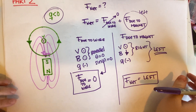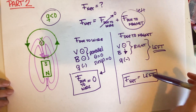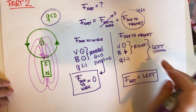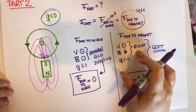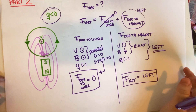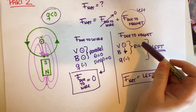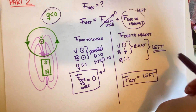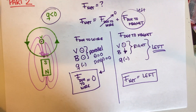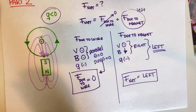They didn't ask for a magnitude so we don't need to calculate that — the final answer is left. This is very important: you must know how to use the right-hand rule, but you always have to consider the sign of the charge afterward. The negative of right is left. Anyway, I hope you found this useful — if you did please leave a like, it really helps our channel, and I'll see you in the next video.